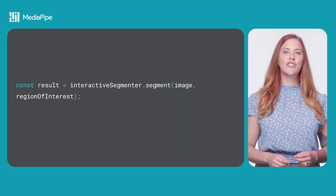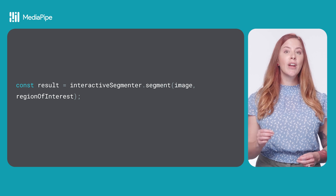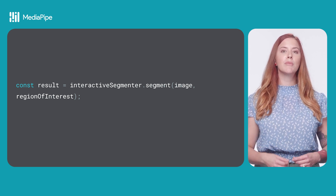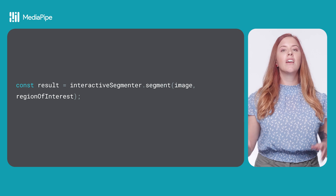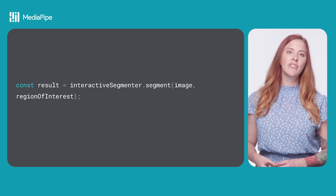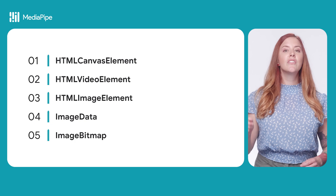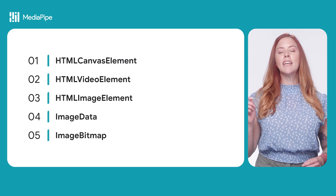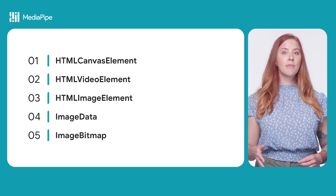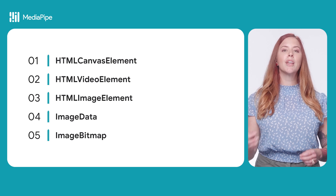To run segmentation on an image, use the InteractiveSegmenter segment method, passing the image source. This function is synchronous, which is good to keep in mind when designing your UI. The source can be an HTML canvas element, HTML image element, image data, or image bitmap.